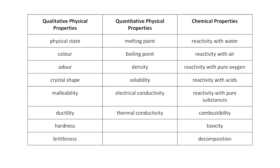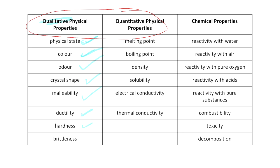Here's a list of physical and chemical properties we might see in chemistry. For qualitative physical properties, we're looking at: the physical state — solid, liquid, or gas; the color it gives off or shows; whether there is an odor (be careful when smelling things in chemistry); crystal shape; whether it's malleable, meaning it can be bent; ductile, meaning it can be stretched into wiring; hardness; and whether it's brittle if you try to bend it.